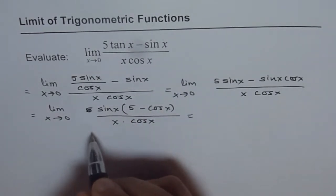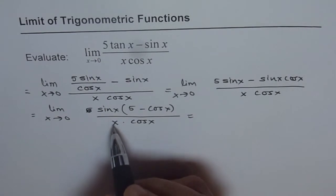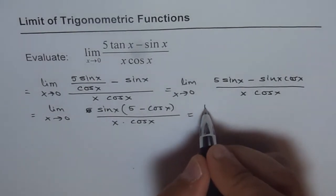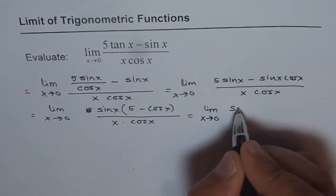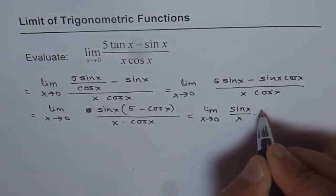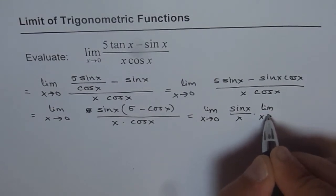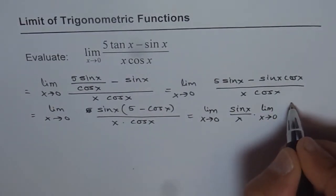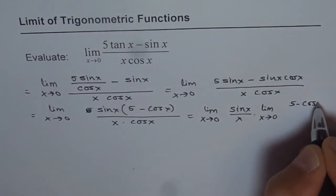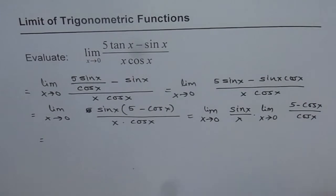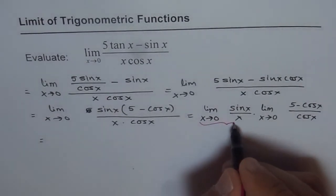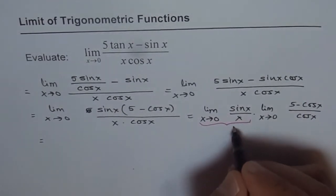Now we will split as you can understand sin x over x. This is what we wanted. So we get limit x approaches 0 of (sin x / x) times limit x approaches 0 of (5 - cos x) / cos x. Now the first part as you know is 1. The limit of sin x over x is 1.